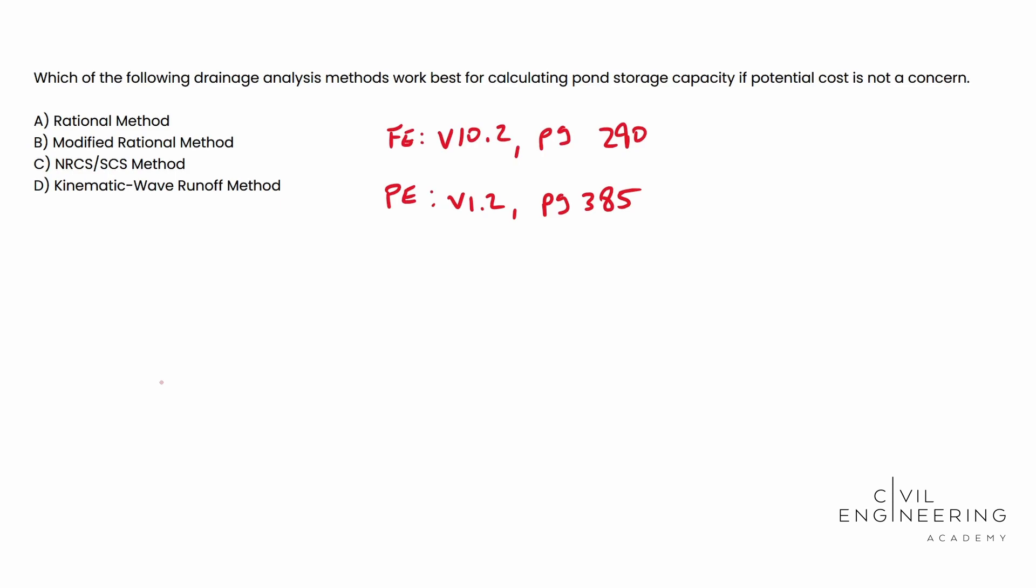Now, if money or site conditions are limiting you, you can get by with rational or modified rational. You just won't get that little safety factor. I'm using air quotes here. Whenever I say that safety factor, it's going to end up being 75% smaller than if you use the SCS method.